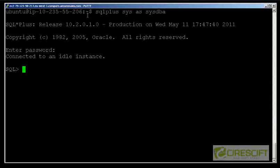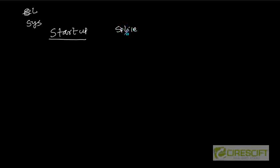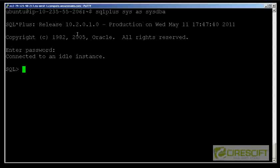I'm connected to the Oracle server. The first command I'll show you is STARTUP. If I run this command, it reads from the default parameter file, which in this case is the SP file (server parameter file). In the SP file I have specified the SGA size, number of DB writers, database name, and so on. When I run STARTUP, it automatically looks at the SP file, figures out the required parameters, and starts the database.